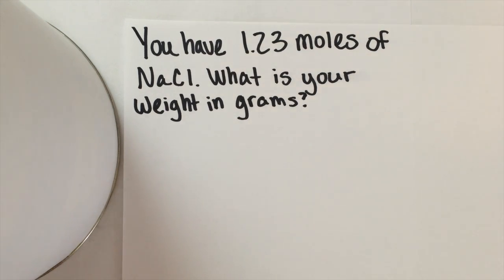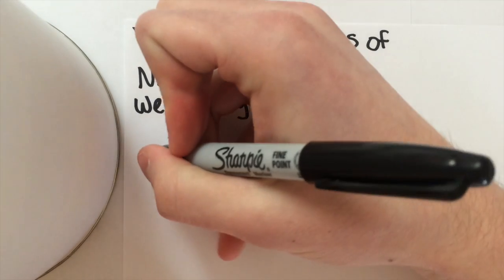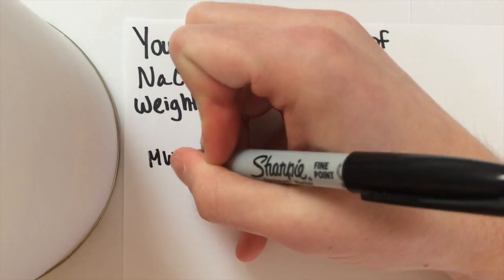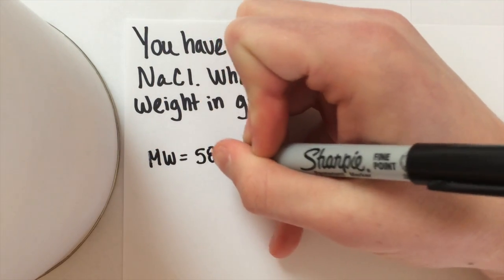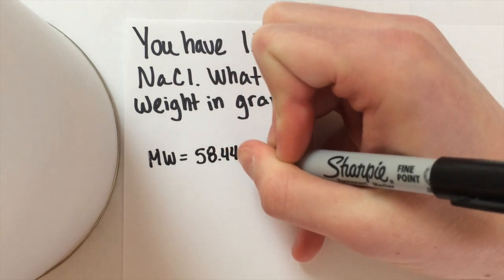First let's find the molecular weight. If you check the periodic table, you will see that sodium chloride has a molecular weight of 58.44 grams.